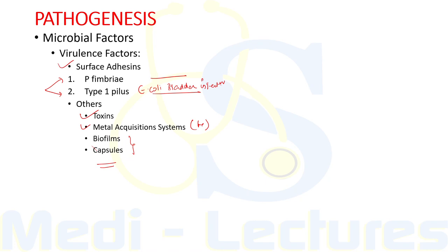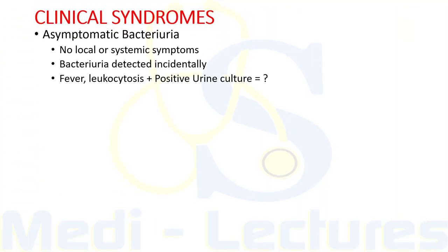Other virulence factors of E. coli include toxins, metal acquisition systems like iron acquisition systems, and formation of biofilms and capsules — all contributing to the ability of pathogenic E. coli to thrive in the bladder. When UTI is suspected, the most important first step is characterization of the clinical syndrome — whether asymptomatic bacteriuria, uncomplicated cystitis, pyelonephritis, prostatitis, or complicated UTI — as this will shape the diagnostic and therapeutic approach.